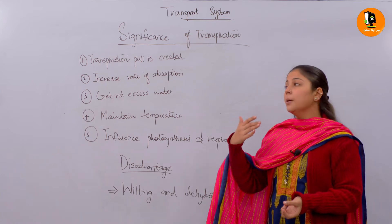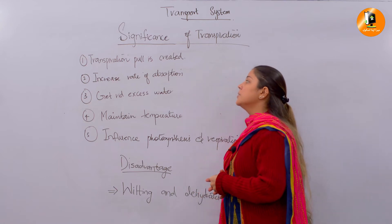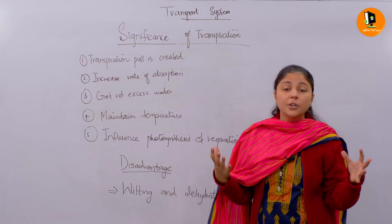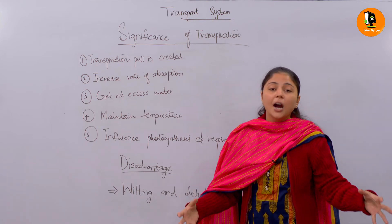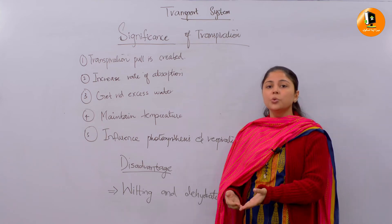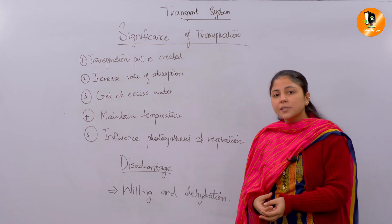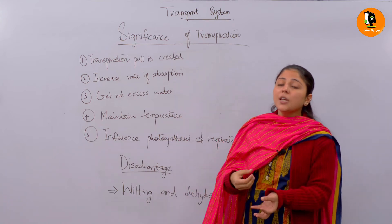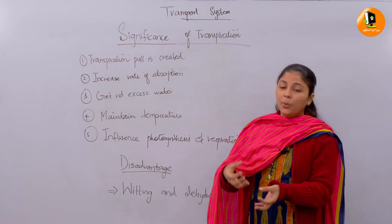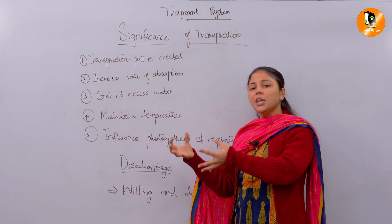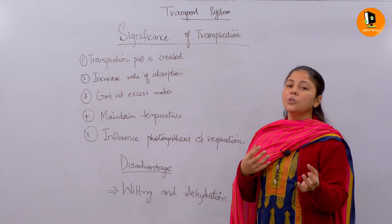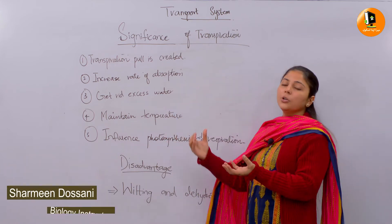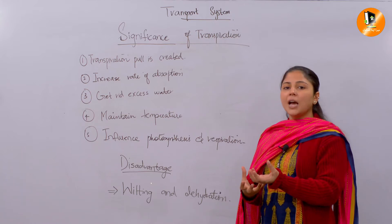The first important significance is that transpiration pull is created. What is transpiration pull? As I discussed in earlier videos, when the plant absorbs water molecules from the soil through the roots and gives it to the xylem vessels, the xylem vessels take up the water against gravity and pull it up to the rest of the plant. When the leaves lose water in the form of water vapors, it creates a pull — that is the transpiration pull.